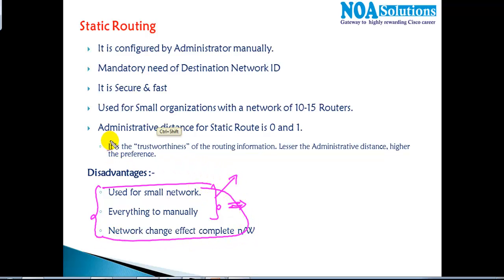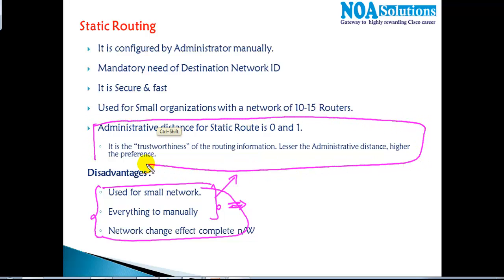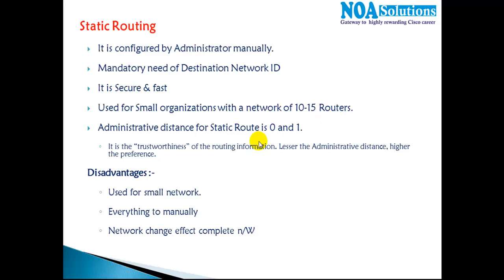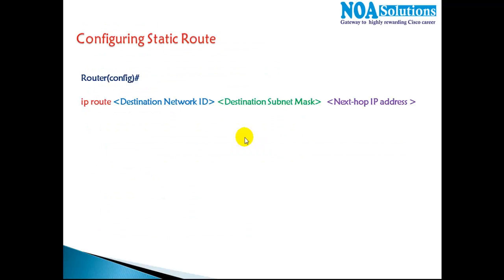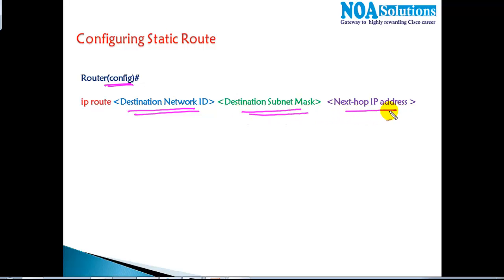These are the major disadvantages which make static routing not much applicable in production networks. I'll discuss administrative distance in more detail in a separate class with examples. To configure static routing, we need to be in config mode and define the destination network ID, destination subnet mask, and next-hop IP address. We'll see how to configure this with a basic example in the next section.